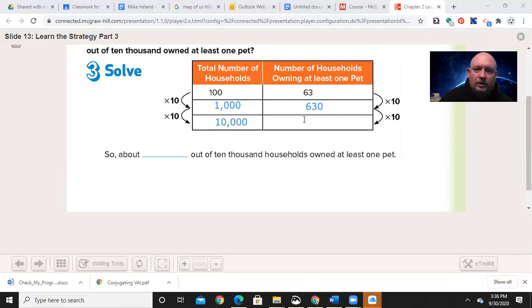Over here, 630 times 10 means I'm adding a zero to the end. So now I'm going to have 6,300. So about 6,300 households out of 10,000 owned at least one pet.